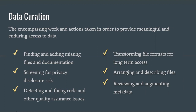Fixing code issues is another big one. We'll run the code and detect issues that come up if you move the code from one operating system to another and you're dealing with a different set of packages. We transform file formats — we might get it in Excel and transform it to CSV for preservation purposes, retaining both. We'll arrange files, so if we get a package with 100, 200, sometimes a million files, we think about the arrangement so somebody could actually use them. We also review and augment the metadata to make sure datasets are contextualized and linking back to related publications.